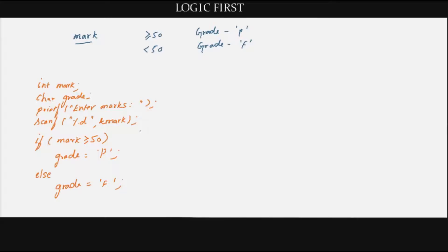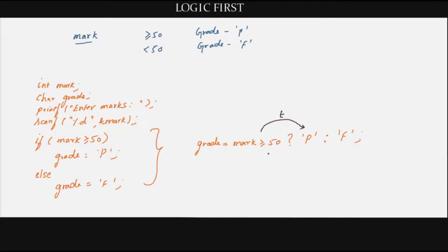If you want to replace this with a conditional operator, you put the expression first — mark greater than or equal to 50 — then a question mark. If the mark is greater than or equal to 50, grade takes the value 'P'; if not, grade takes 'F'. You assign this entire expression to grade on the left-hand side. Within the conditional operator, you just place the value to be assigned — 'P' or 'F'.